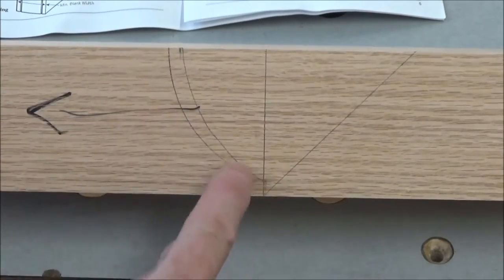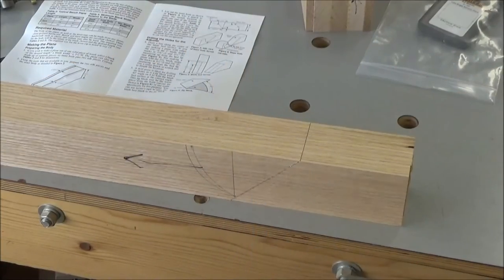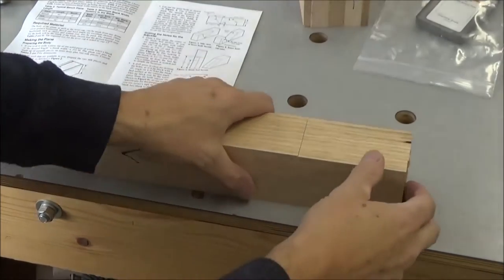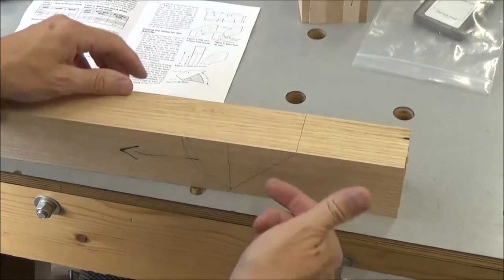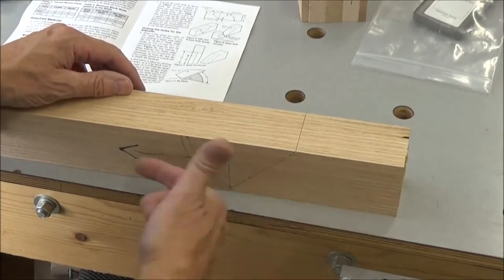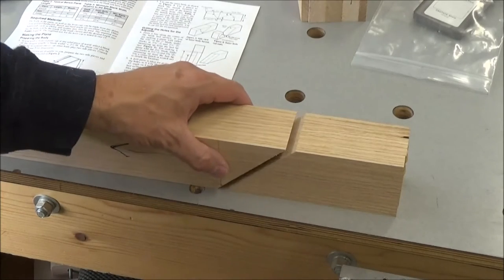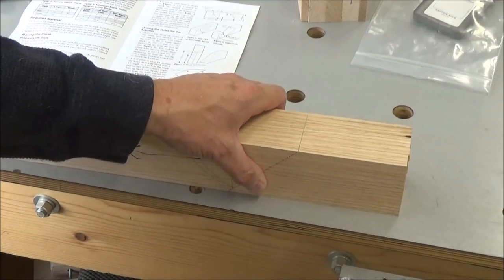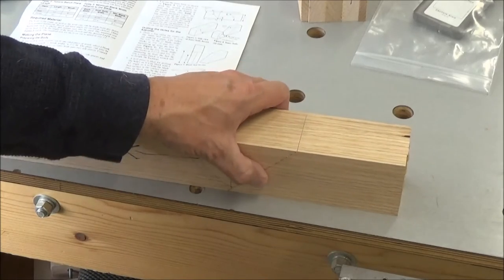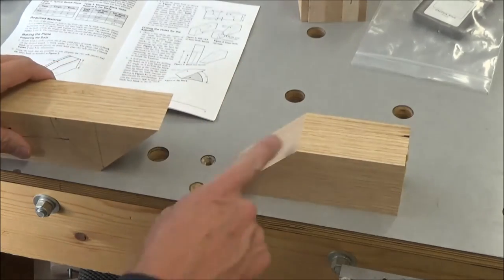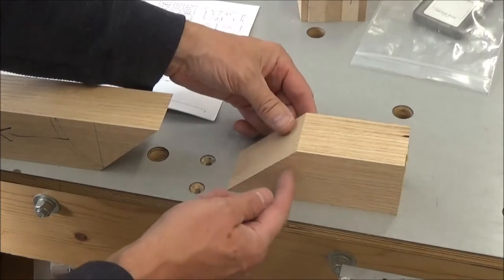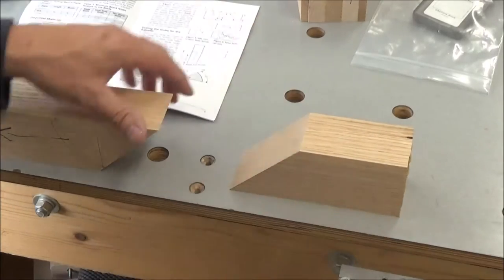In the directions it didn't say which side of the line to cut, so I cut on the waste side of the line. You can see it turned out pretty clean. The one thing I'm going to do is check this for square off of this face.